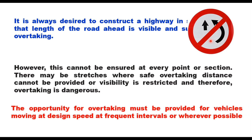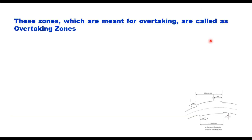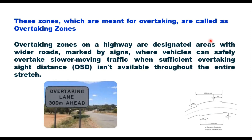The opportunity for overtaking is provided for vehicles moving at design speed at frequent intervals or wherever possible. These zones meant for overtaking are called overtaking zones. Overtaking zones on a highway are designated areas with wider roads, marked by signs, where vehicles can safely overtake slower-moving traffic when sufficient overtaking sight distance is not available throughout the entire stretch.